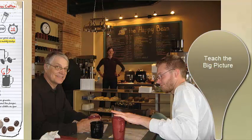The next principle is to start strong and teach the big picture. This training is probably going to be common to all employees. It's about the vision, mission, goals, and company culture. It helps each employee understand what the organization is all about and how they fit into it.